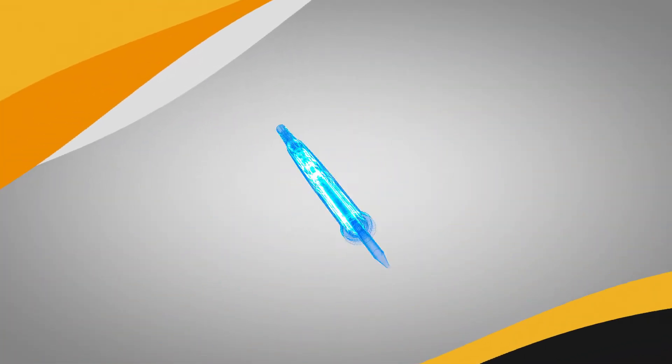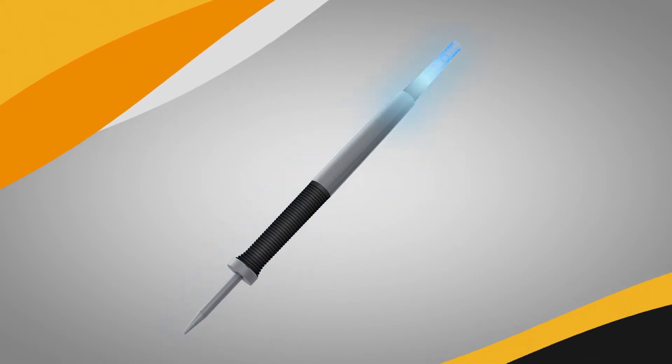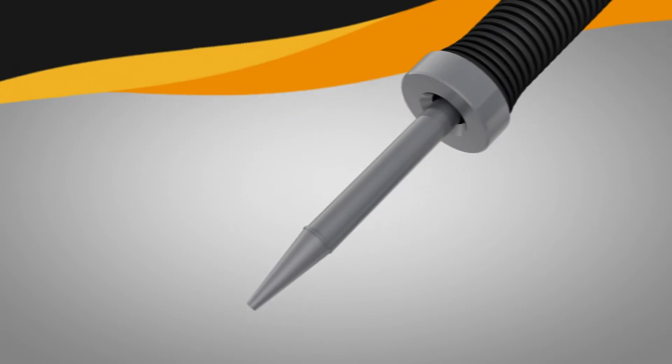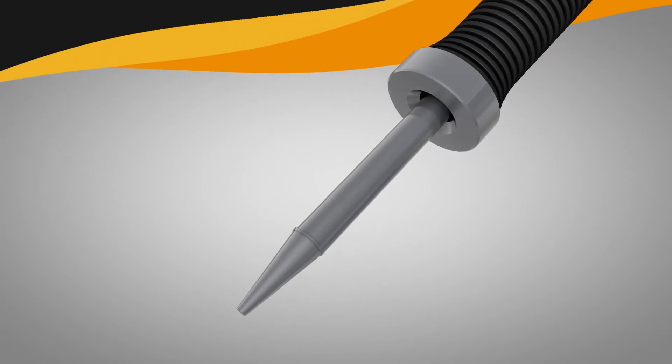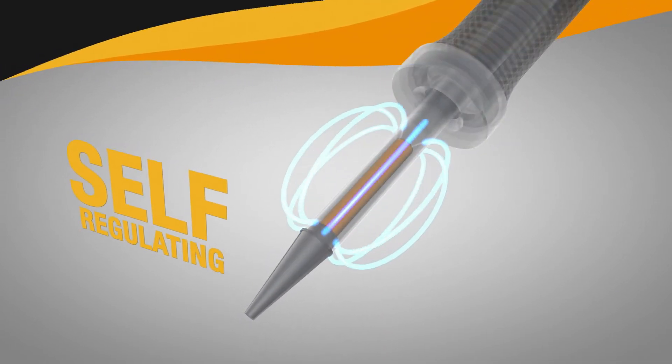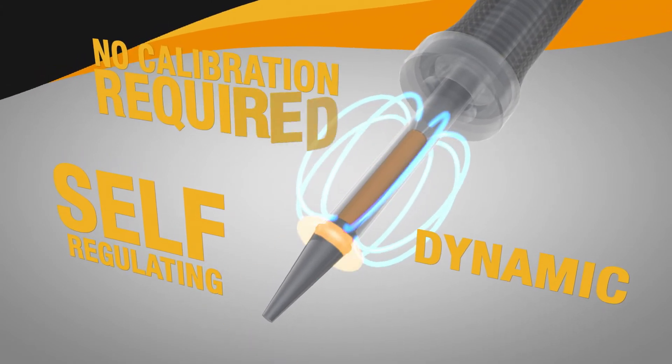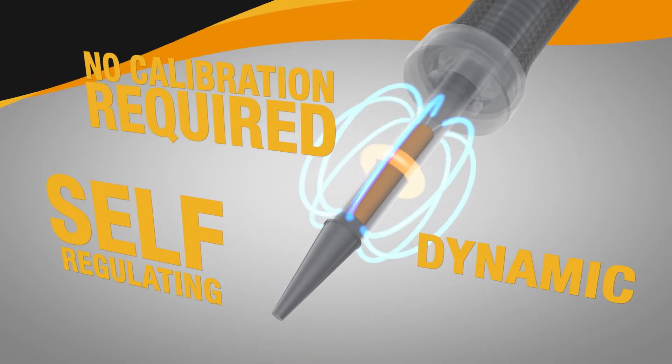SmartHeat senses the thermal load and instantly delivers power on demand directly to the joint. The precise amount of power is delivered using a self-regulating heater embedded in the tip. This provides a fast, safe and repeatable process with no calibration required.